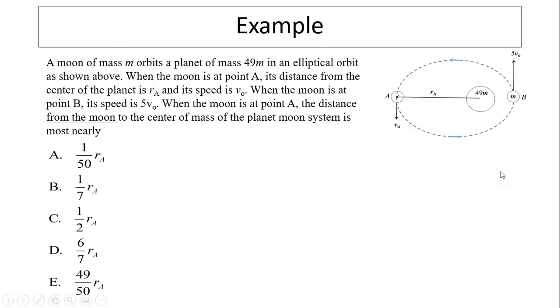Let's consider the following two examples. The moon of mass M orbits a planet of mass 49M in elliptical orbit as shown. When the moon is at point A, its distance from the center of the planet is RA and its speed is V0. When the moon is at point B, its speed is 5V0. When the moon is at point A, the distance from the moon to the center of mass of the planet is how much? This is really to find the center of mass. Center of mass is M1X1 plus M2X2 divided by M1 plus M2. Since this is asking from point A, we can set this to be zero. M1 times zero plus M2, 49, 49 times RA divided by the two added together, which is 50M. So the answer is 49 over 50 times RA.